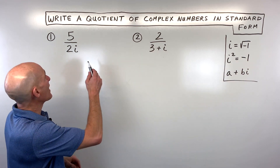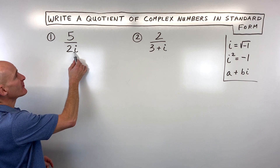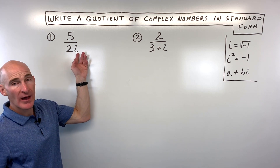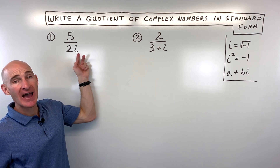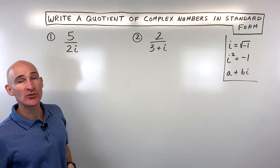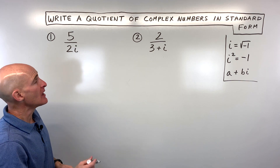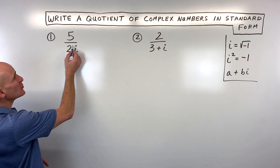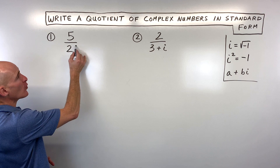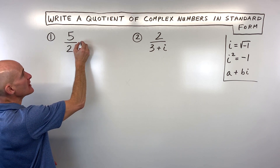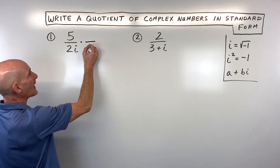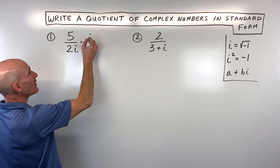For this first problem, we have five divided by two i. We don't want this i in the denominator — it's considered improper — so what we want to do is get rid of that i in the bottom. The way that we do that when it's a monomial, meaning one term, is we multiply by i over i.